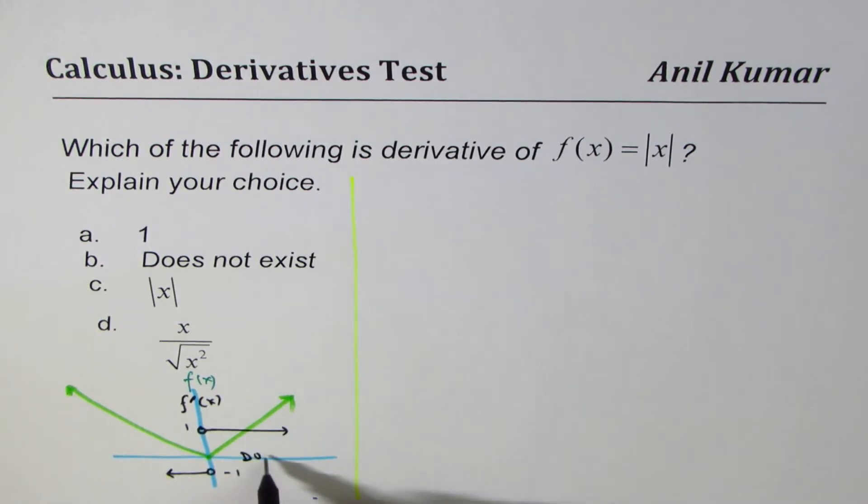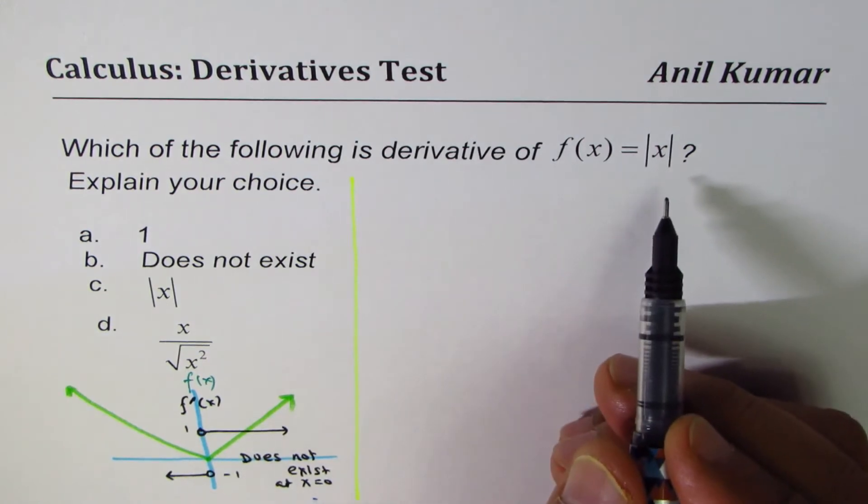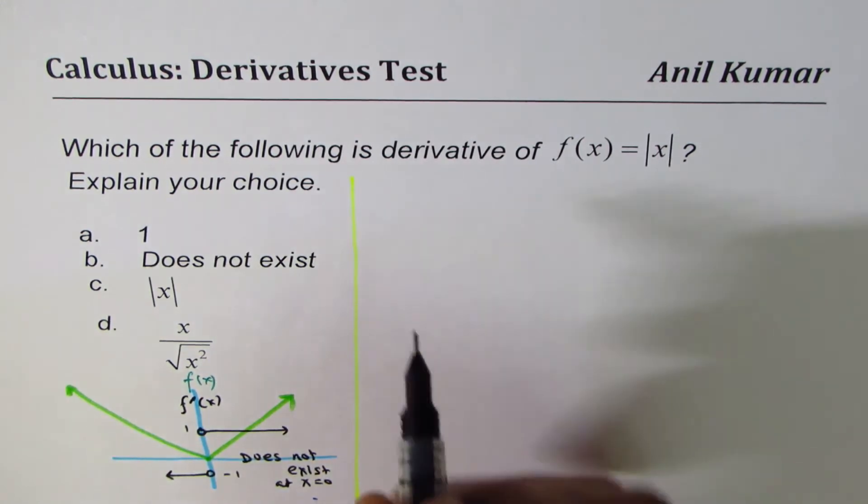So, it does not exist at x equals to 0. So, that's how it is. Now, what is the right choice? So, let me solve this with algebraic equation.